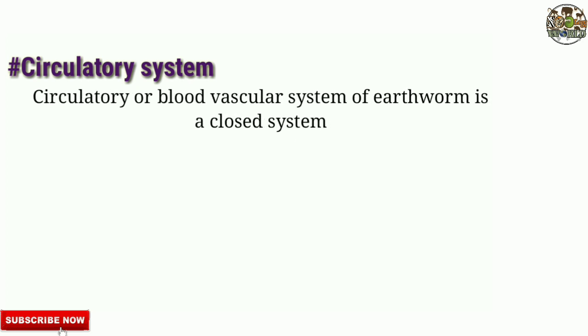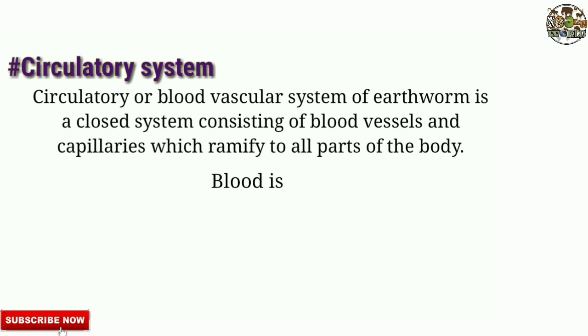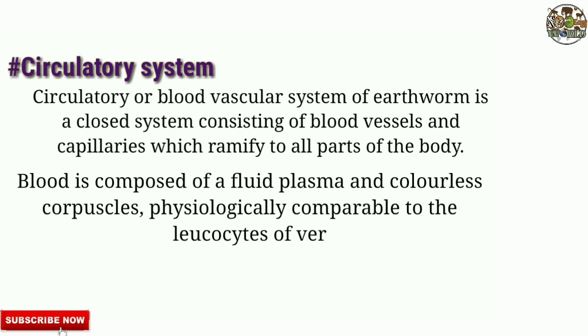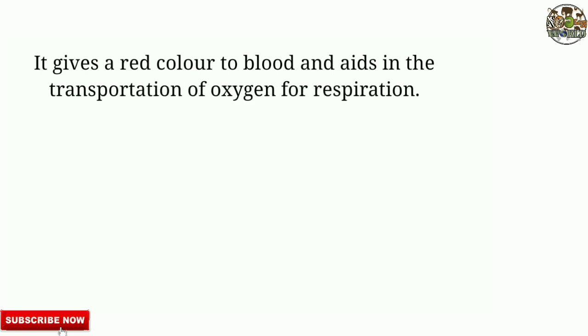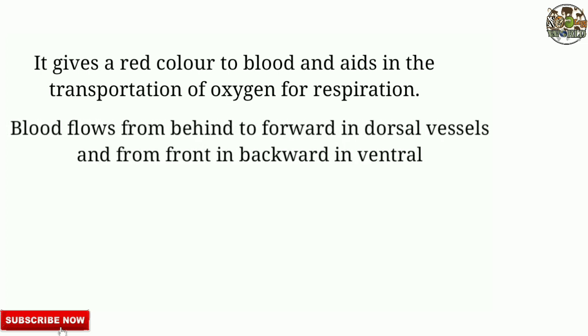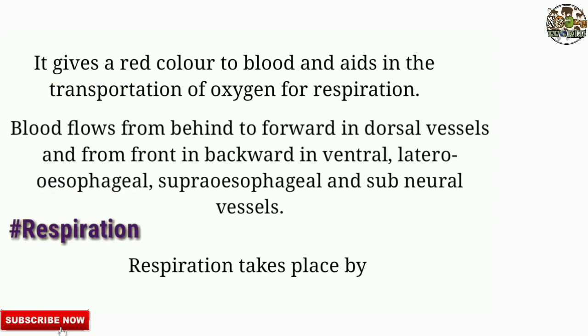Circulatory system: The blood vascular system of earthworm is a closed system consisting of blood vessels and capillaries which extend to all parts of the body. Blood is composed of fluid plasma and colorless corpuscles, physiologically comparable to the leucocytes of vertebrates. The red respiratory pigment, hemoglobin, occurs dissolved in plasma, giving red color to blood and aiding in the transportation of oxygen. Blood flows from behind forward in dorsal vessels and from front to backward in ventral, lateral, supra-oesophageal, and supraneural vessels.